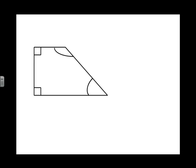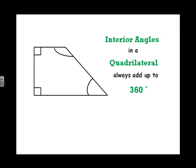But if I wanted to know how to calculate interior angles of a quadrilateral, I'd have to remember that interior angles in a quadrilateral always add up to 360 degrees. So, what does that mean?